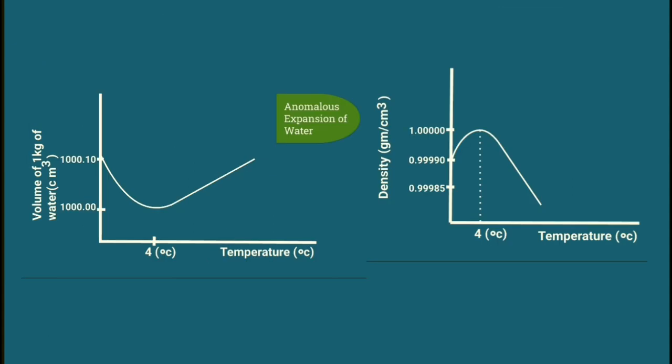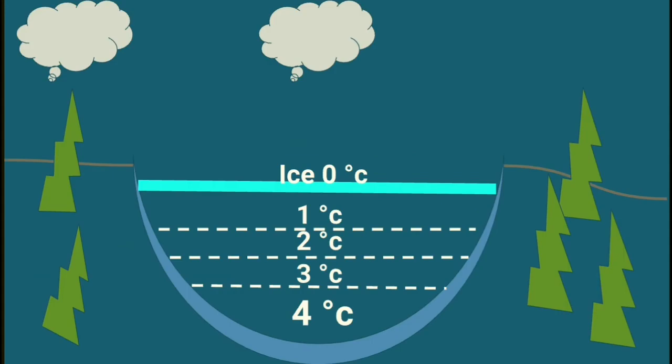Now, importance of anomalous expansion of water for aquatic environment. In cold countries, water in lakes, rivers, and ponds gradually cools to 4 degrees Celsius and surface water becomes denser, so it sinks to the bottom.